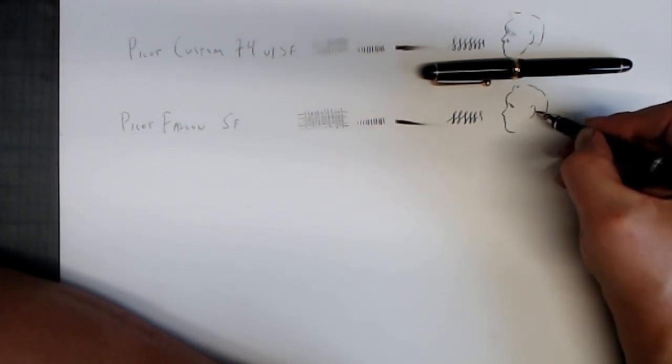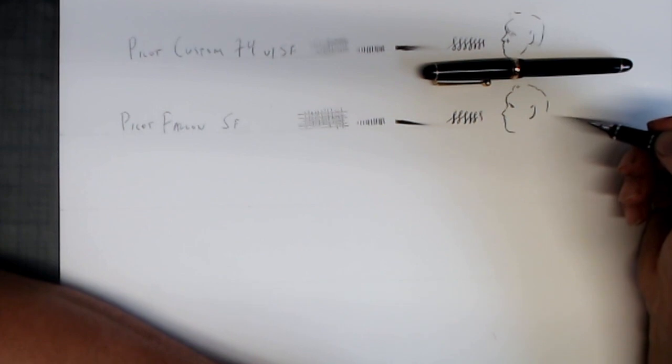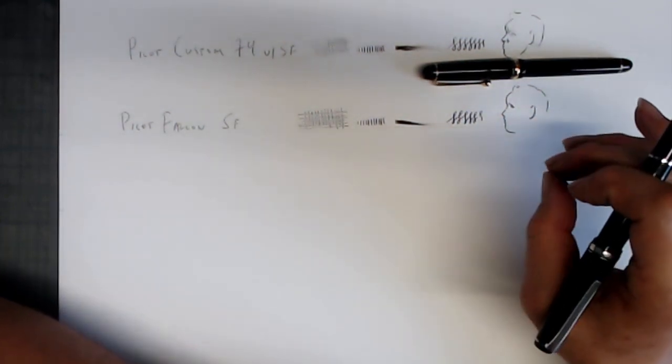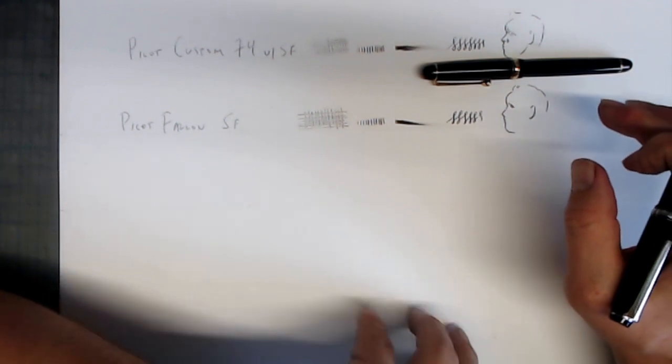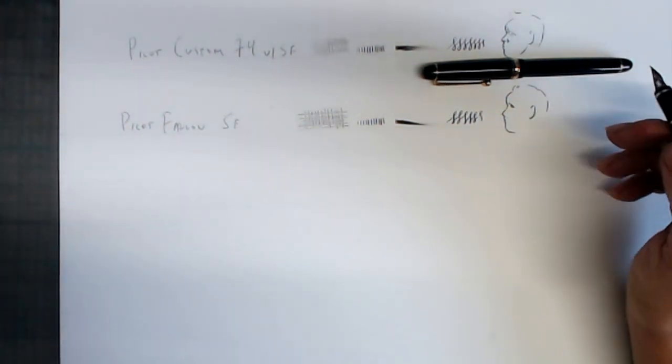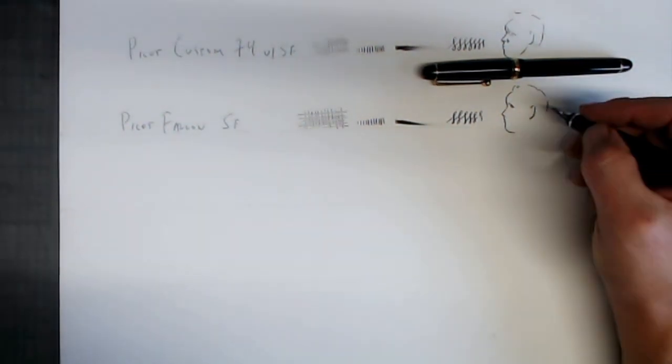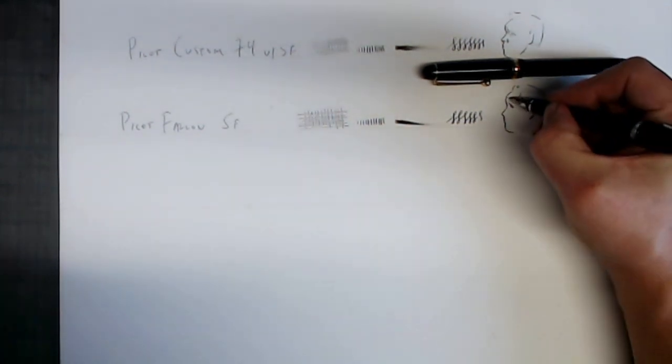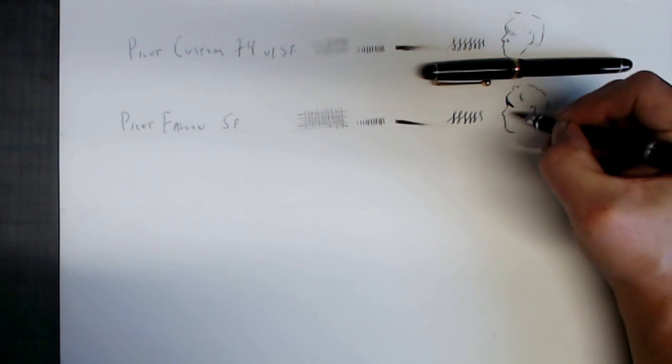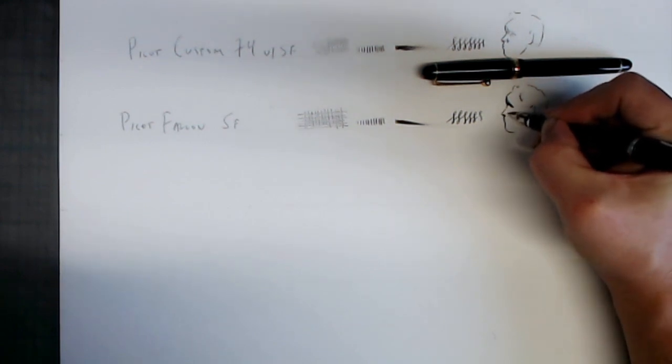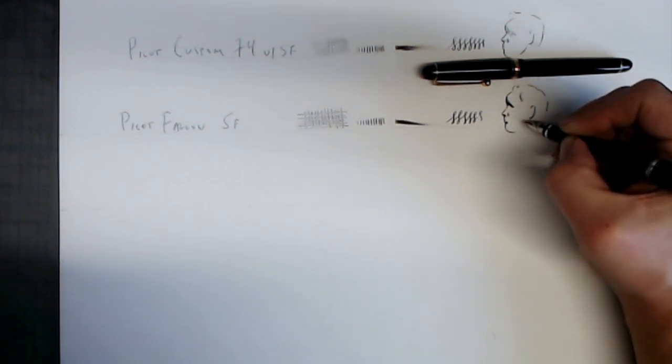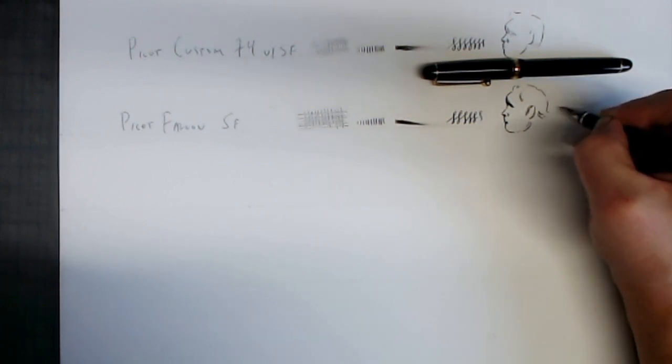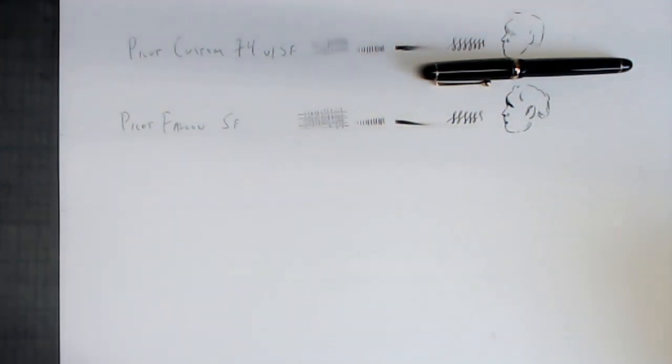This can be a little bit of an issue when you're cross-hatching on slightly cheaper paper. Sometimes the paper gets really wet. Sometimes the paper will feather. I don't have as much of an issue with the Custom 74 with that, but I do have an issue with the Pilot because of that. Let's do a little bit of cross-hatching here. A little bit of a heavier line.